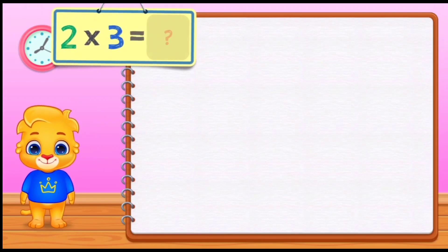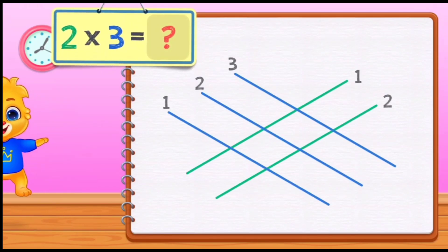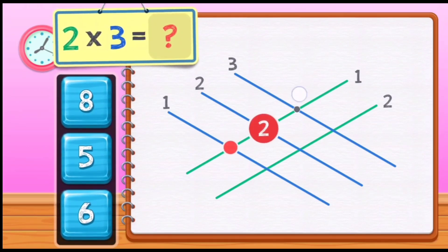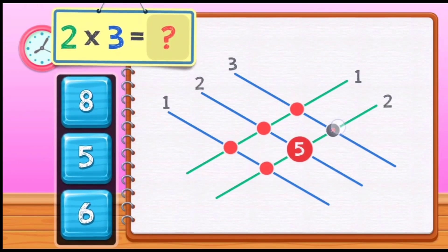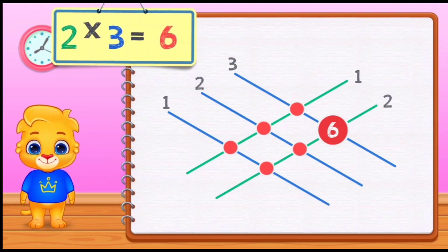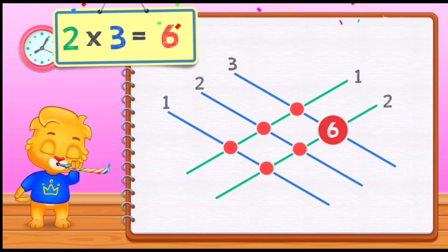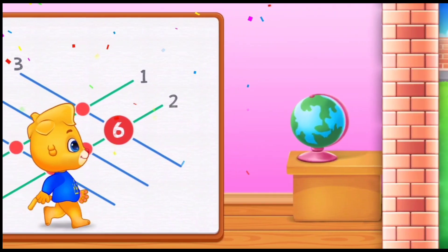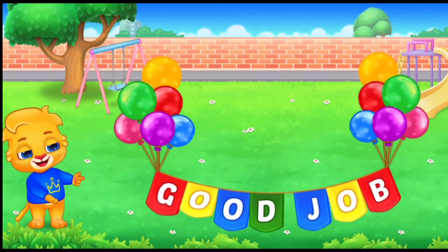Two times three equals: one, two, three, four, five, six. Two times three equals six. Good job!